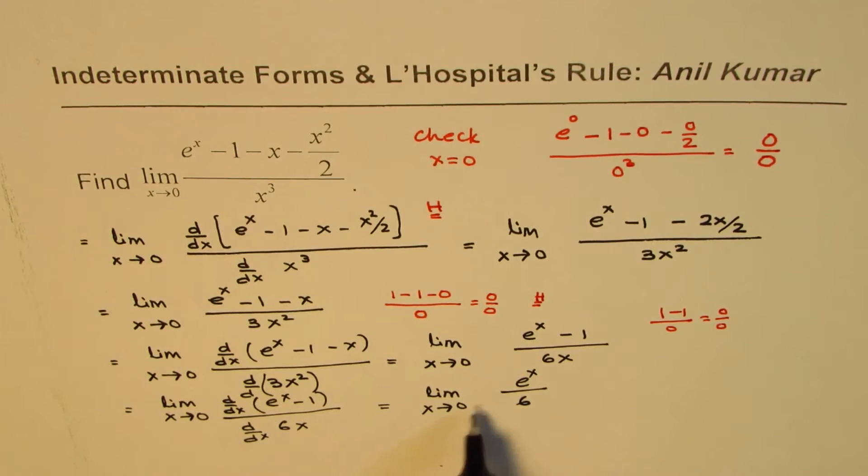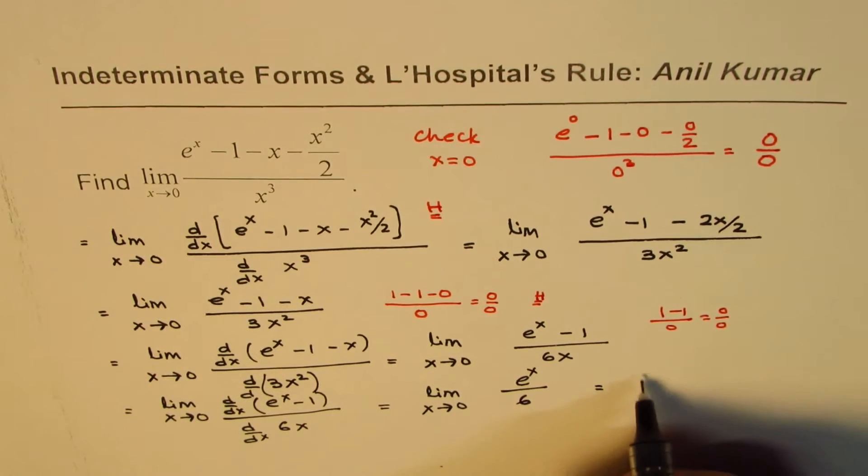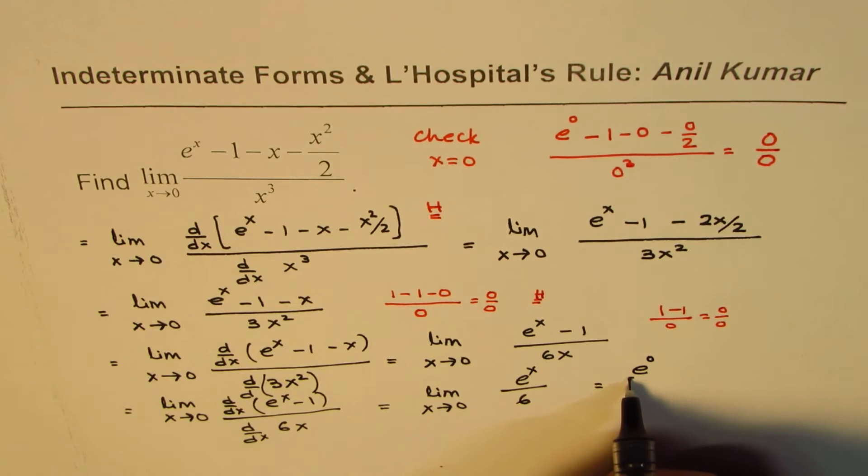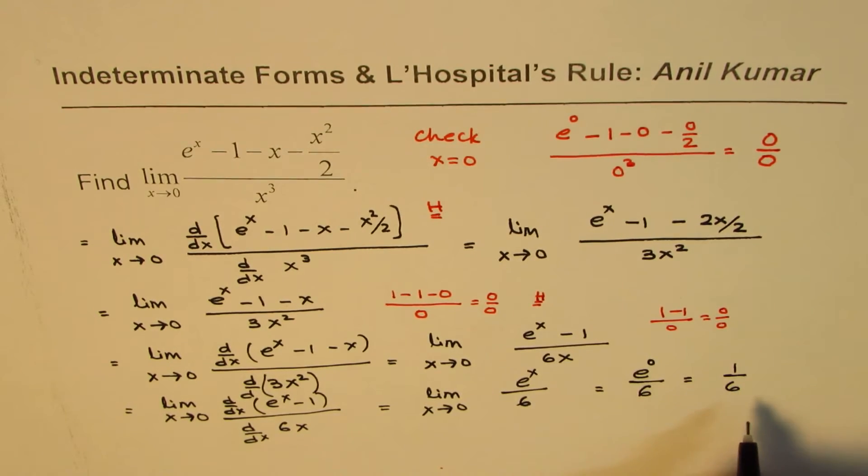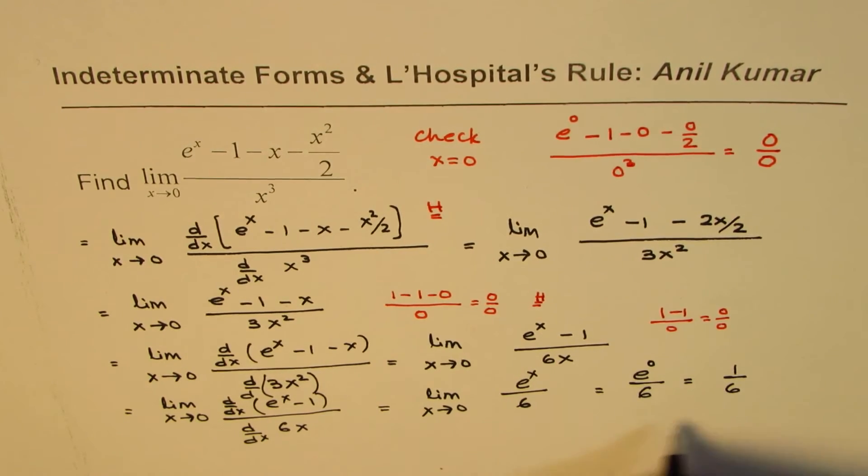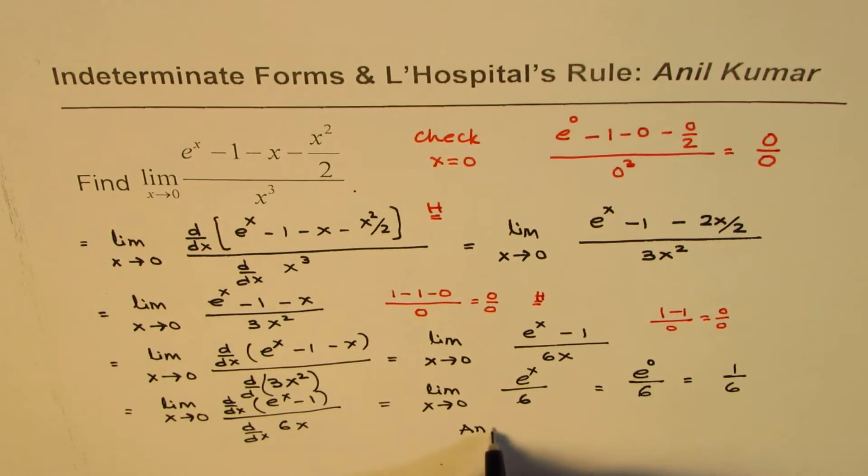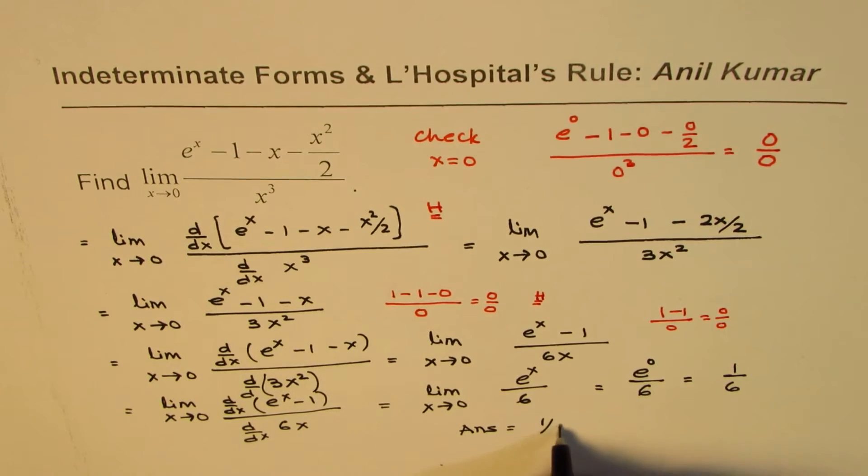At this stage, if I substitute 0, what do I get? I get e to the power of 0 over 6, which is 1 over 6. So the limit of this function is 1 over 6. So that is our answer. The answer is 1 over 6.